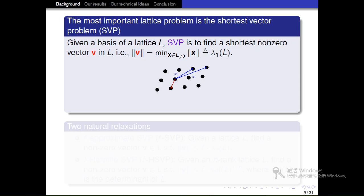In lattice theory, the most important problem is the shortest vector problem, SVP for short. Given a basis of lattice L, SVP is to find the shortest nonzero vector v in L such that the norm of v equals lambda 1 of L, which is called the first minimum of the lattice.